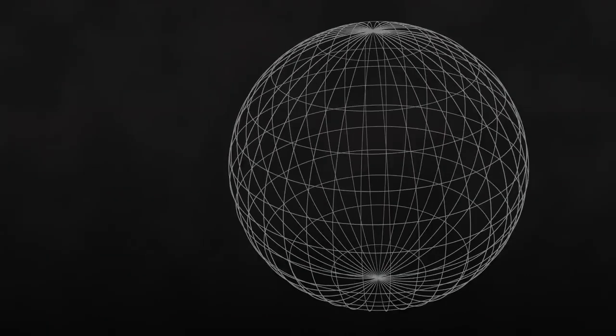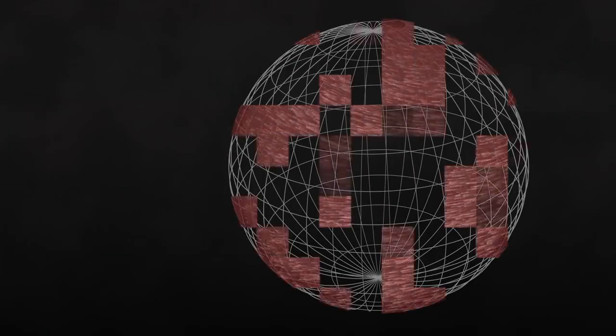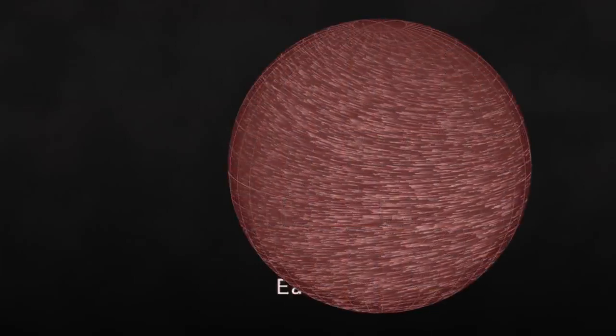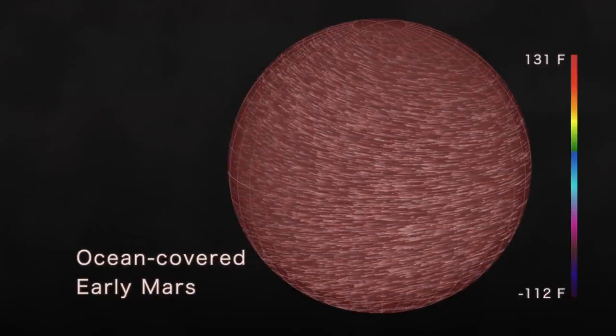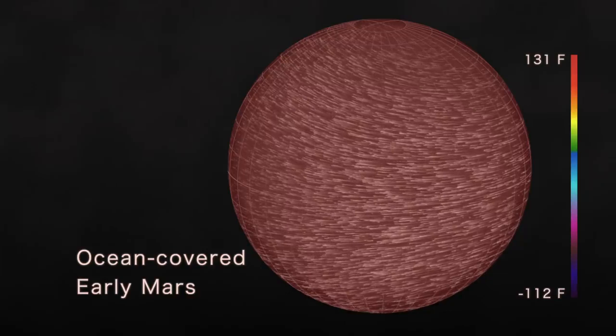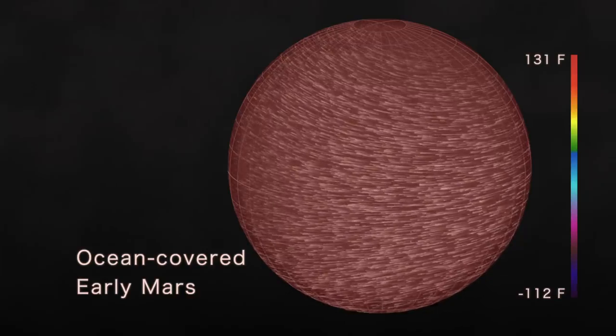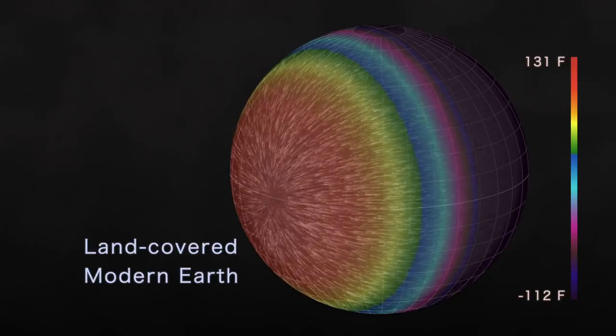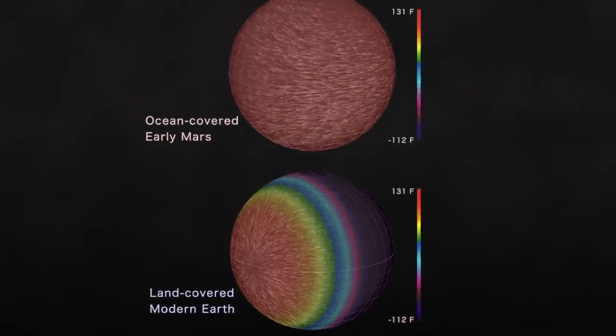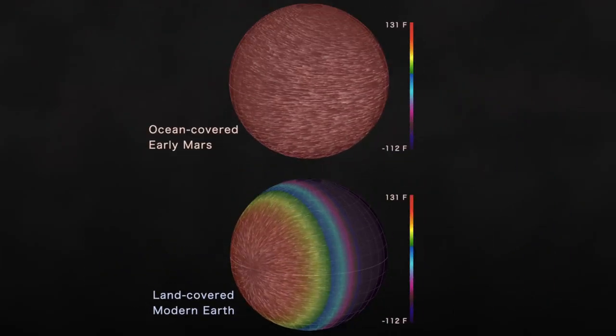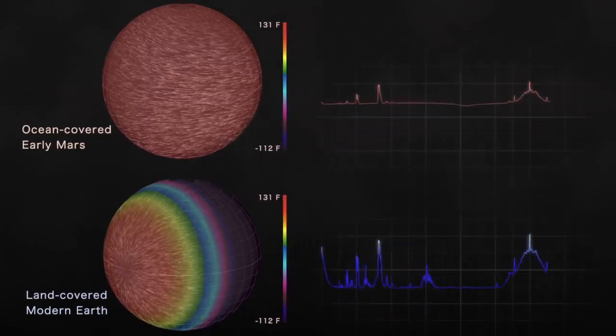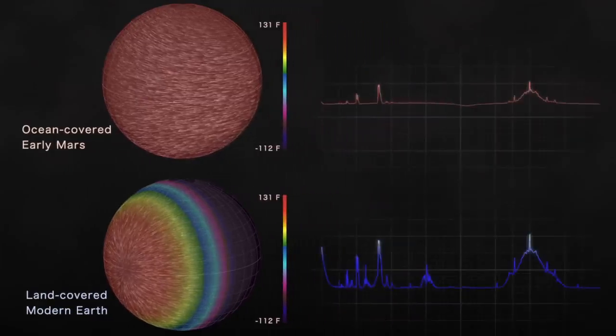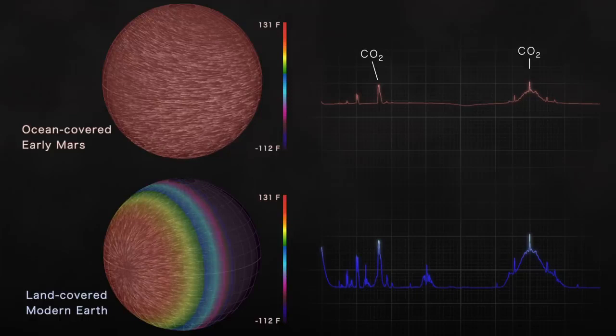Researchers at NASA's Goddard Space Flight Center created models of the planet to explore its potential conditions. One version is a water-covered world with an atmosphere similar to early Mars, but denser. Another looks like a completely dry version of today's Earth. Both models have vastly different surface temperatures. Light passing through their atmospheres creates distinct signals because different molecules are present.